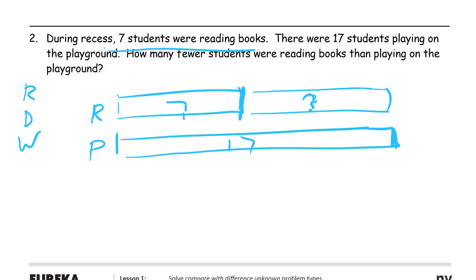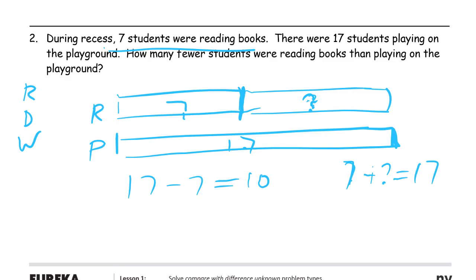How much shorter is this piece than that one? That's the question mark — the difference between the two. The difference between 17 and 7: we're subtracting to find out what that is, so 17 minus 7 equals 10. You could also write this as 7 plus something equals 17, but that doesn't really make sense with the story. The story is we know about the 7 and we know about the 17 and we're trying to find this missing piece. So it makes more sense to compare the 7 and the 17 to find out the 10.